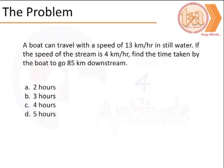Let us begin with reading the problem. A boat can travel at a speed of 13 km per hour in still water. If the speed of the stream is 4 km per hour, find the time taken by the boat to go 85 km downstream.